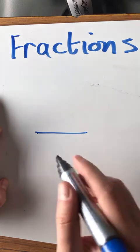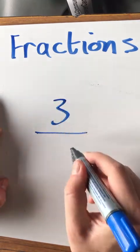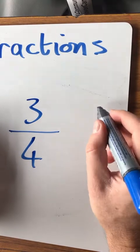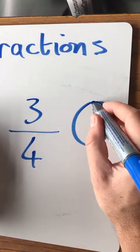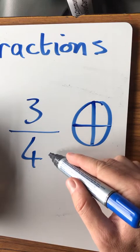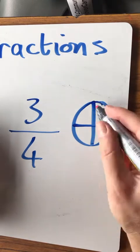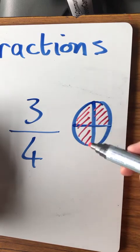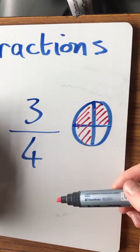So for example, we have three over four. We should have one whole piece of cake. We split it into four parts, and we have three out of the four shaded parts.